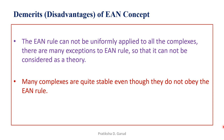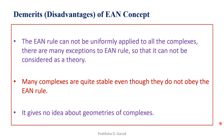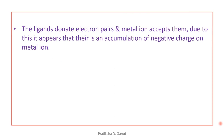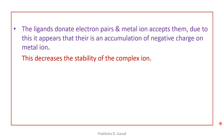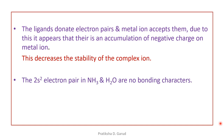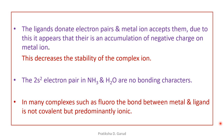Second limitation: many complexes are quite stable even though they do not obey the EAN rule. It gives no idea about the geometries of the complexes. Next disadvantage: the ligands donate the electron pairs and the metal ions accept them, due to which it appears that there is an accumulation of negative charge on the metal ion, which decreases the stability of the complex ion. Also, the 2s² electron pair in NH₃ and H₂O are non-bonding in character. And lastly, in many complexes such as fluoro complexes, the bond between metal and the ligand is not covalent but predominantly ionic. This is regarding the Sidgwick theory or the Sidgwick model. Thank you.